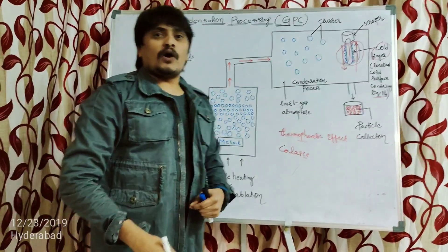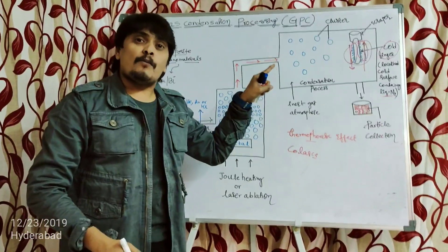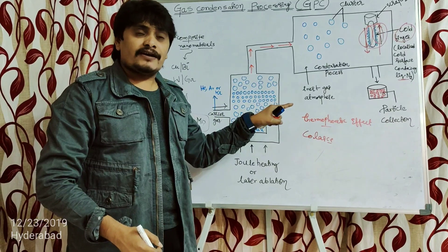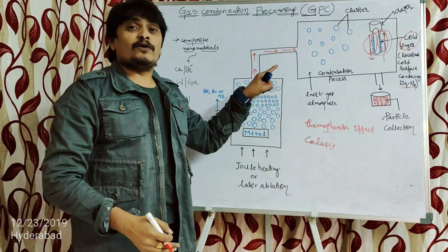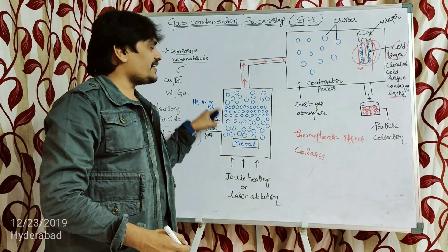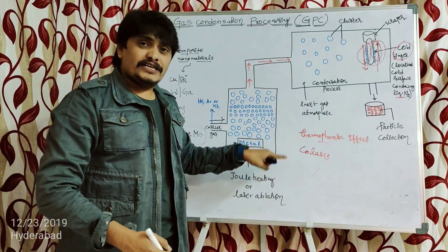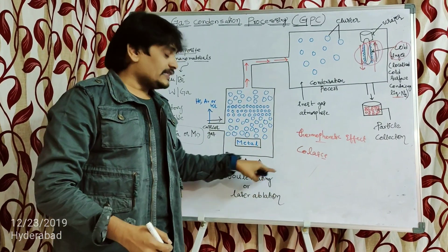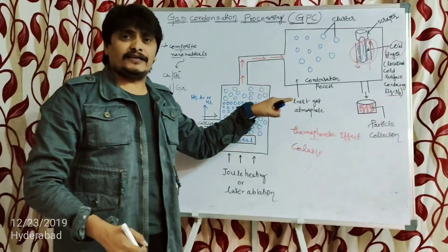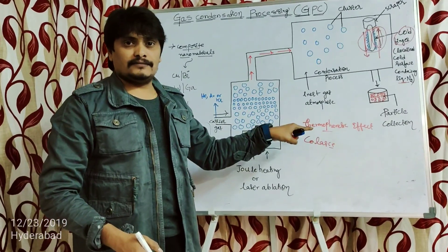This is how, using gas condensation processing, we can prepare composite nanomaterials using metals as a precursor. A refractory crucible and a carrier gas are required. Joule heating and laser ablation, the carrier gas roles, and all other components have been explained clearly. I hope you understood this preparation of composite nanomaterials using the gas condensation processing method. Thanks for watching.